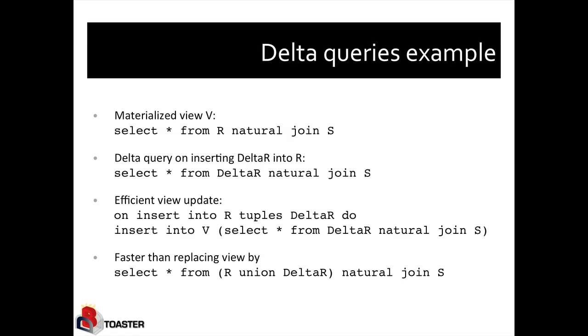That means we join the new tuples in R with S, and the result of this delta query is to be added to the materialized view V. We can do this by having some statement like a trigger on the form: on insert to R tuples delta R, do insert to V the delta query select star from delta R natural join S.